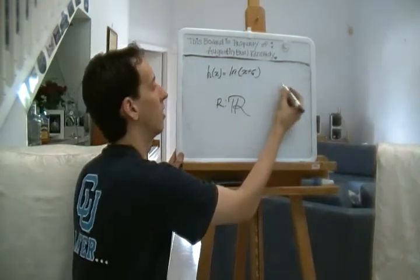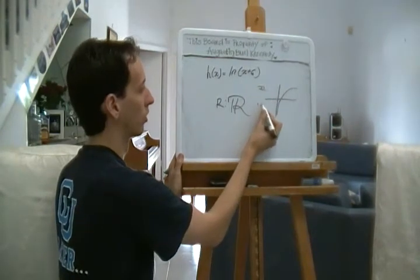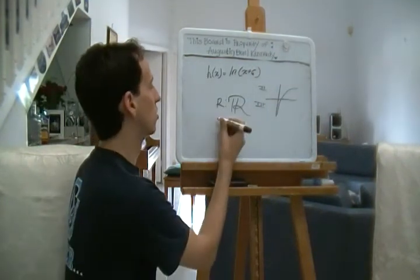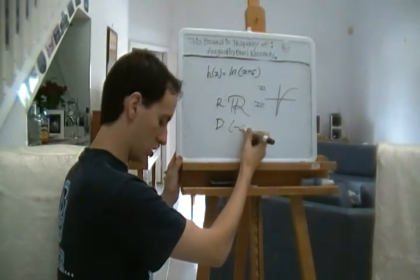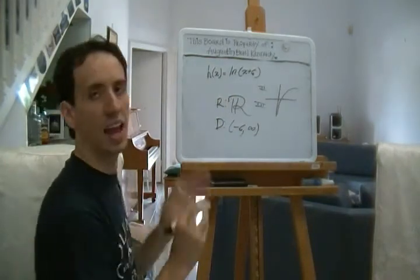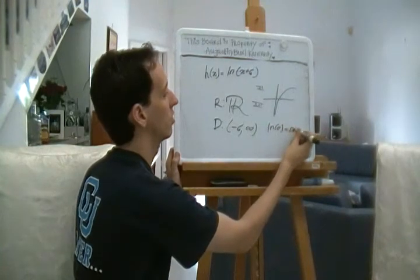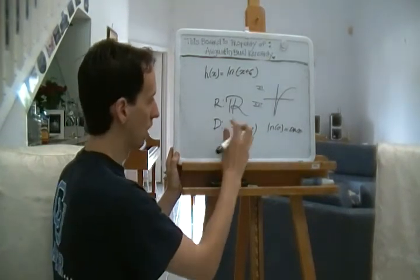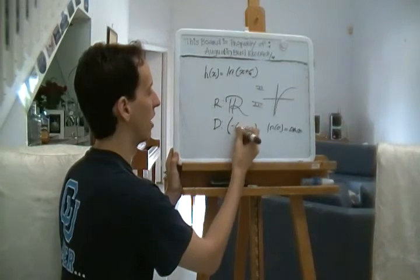So, the range, even of this function ln of x plus six, is going to be all real numbers. Okay? Now you'd also remember, about the ln graph, that it never crosses into quadrants two or three. It's always going to be positive, like positive x values. So that means, that the domain, is going to have to be such that, negative six to infinity.